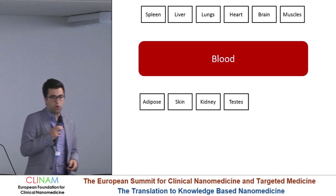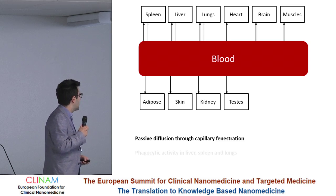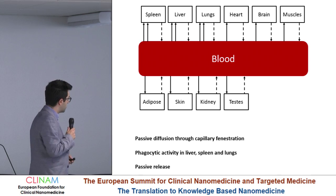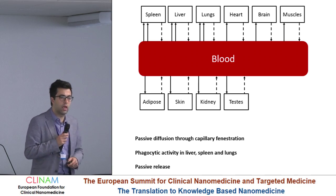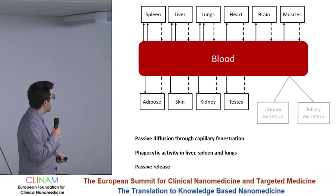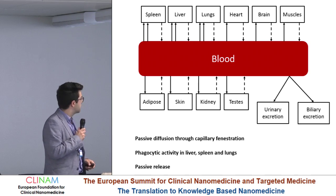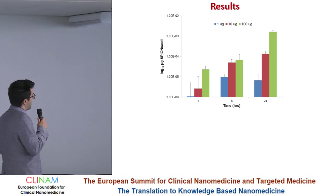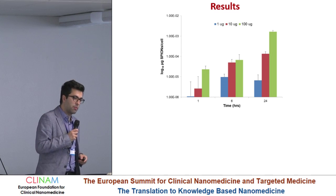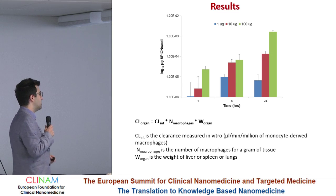Starting from a very basic description of the model: we have a multicompartmental model where we describe the passive diffusion of the nanoparticle through capillaries, as well as the uptake of nanoparticles in spleen, liver, and lungs by macrophages using experimental data. We also include a passive release function that has been described before for this type of SPIONs, in order to have a better description of biodistribution. We included two differential equations to describe urinary excretion and biliary excretion of nanoparticles.